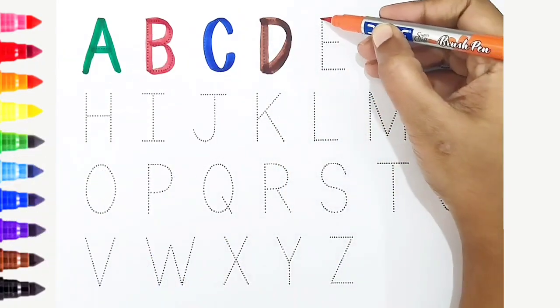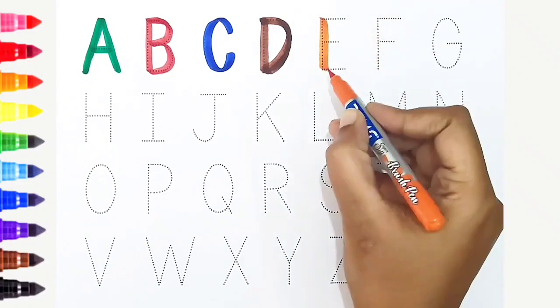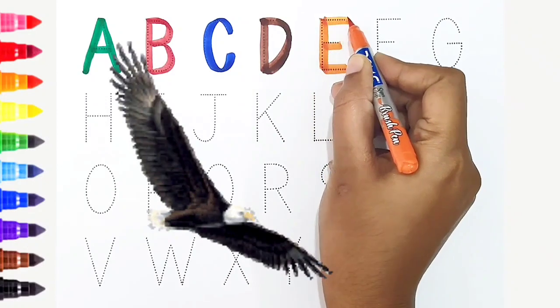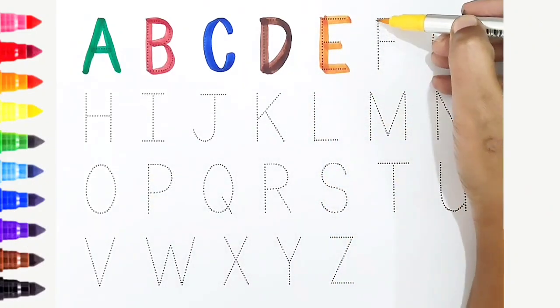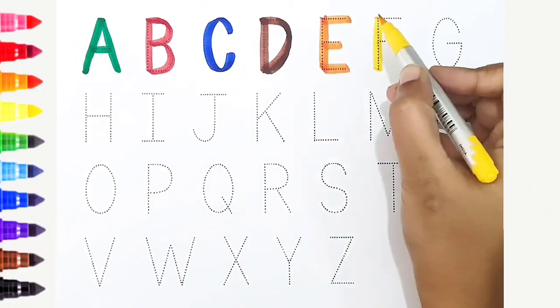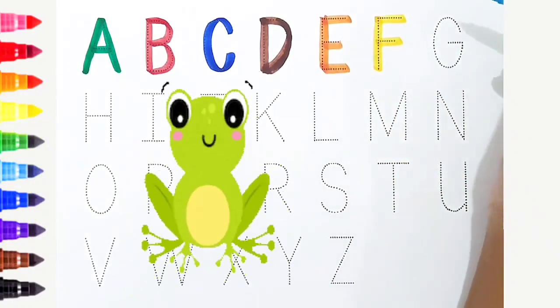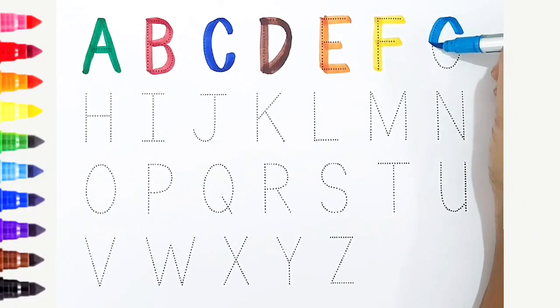F, yellow color, F is for frog. G, light blue color, G is for gorilla. H, dark pink color, H is for hat.